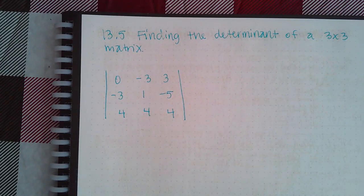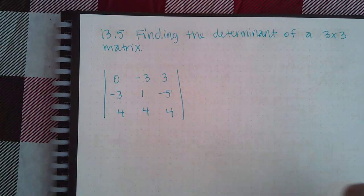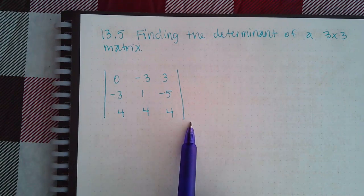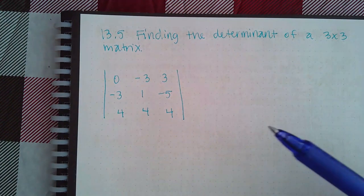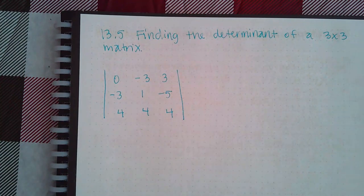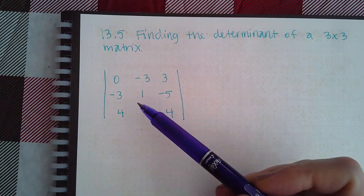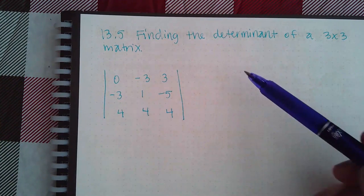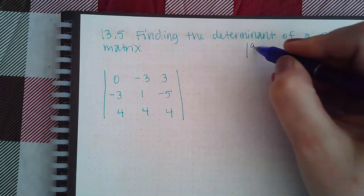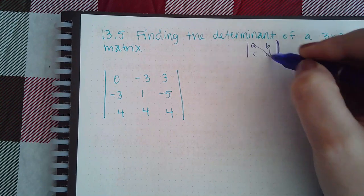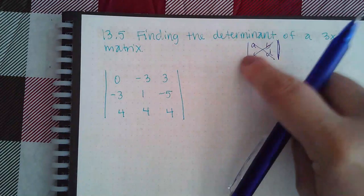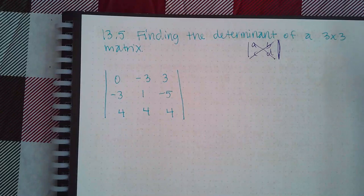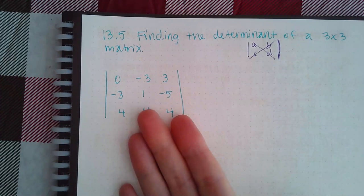Here we have section 13.5, finding the determinant of a three by three matrix. You want to continue the idea of going left to right downward with positives, and left to right going upward with negatives. The difference is that in a two by two matrix you're multiplying two terms together — two elements in one direction, two in the other — and the upward direction gets a minus sign. For a three by three matrix, we have to multiply three numbers together.